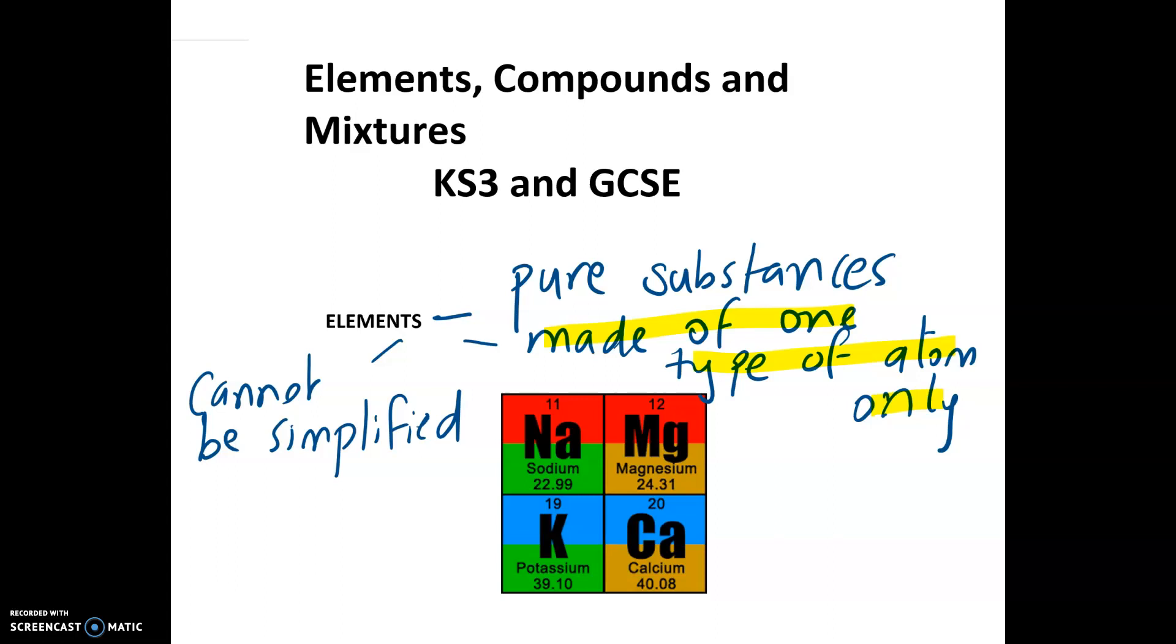So if you can see on here, I've got sodium, magnesium, potassium, calcium. If I was to take sodium and break it down, then every single atom of that would be sodium, same as magnesium and calcium. So no matter which element you take, it's made out of one type of atom only. And whichever element you break down, that's what you're going to get.